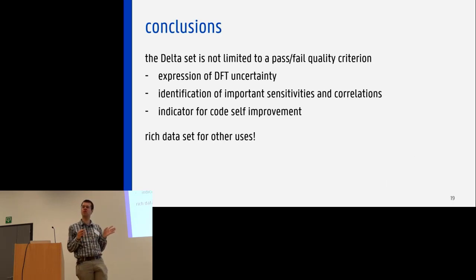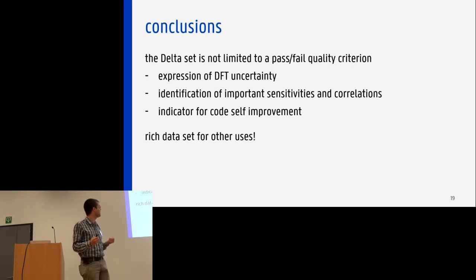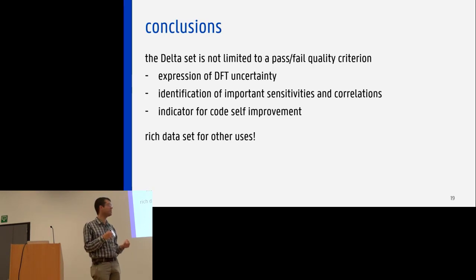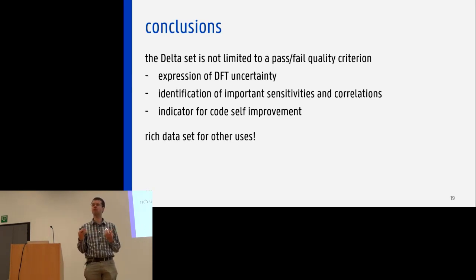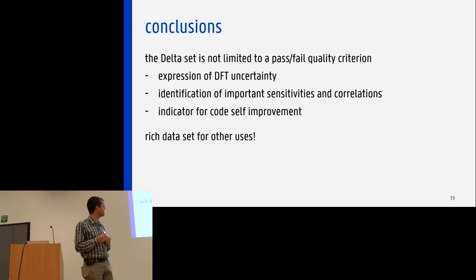In conclusion, I hope I've convinced you that there's a lot of information hidden in the Delta dataset beyond the Delta values themselves. There's a richness in terms of sensitivities in equations of state, and also in terms of how to improve our codes further and how to express the uncertainty associated with comparison between codes. Thank you for your attention.